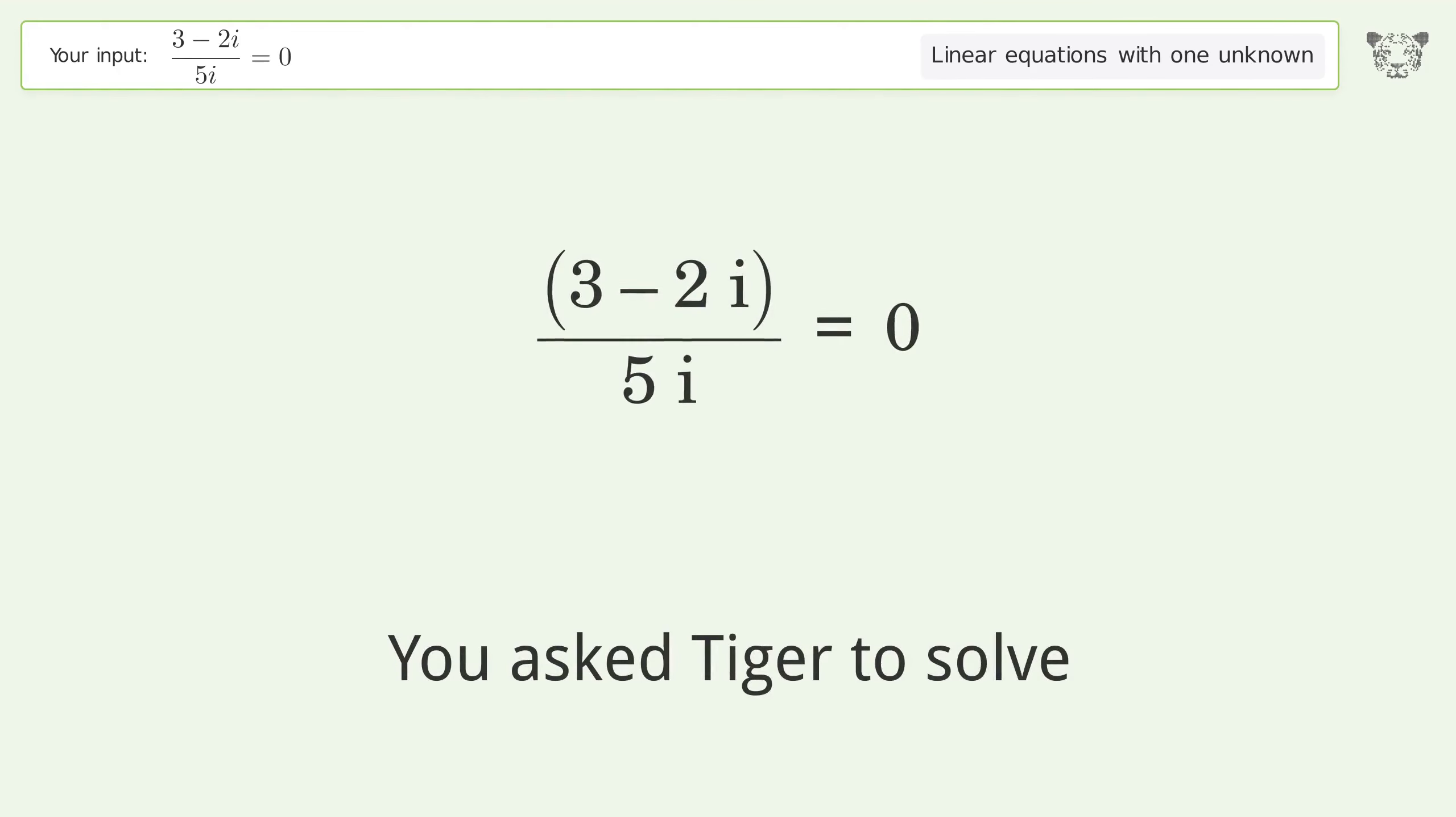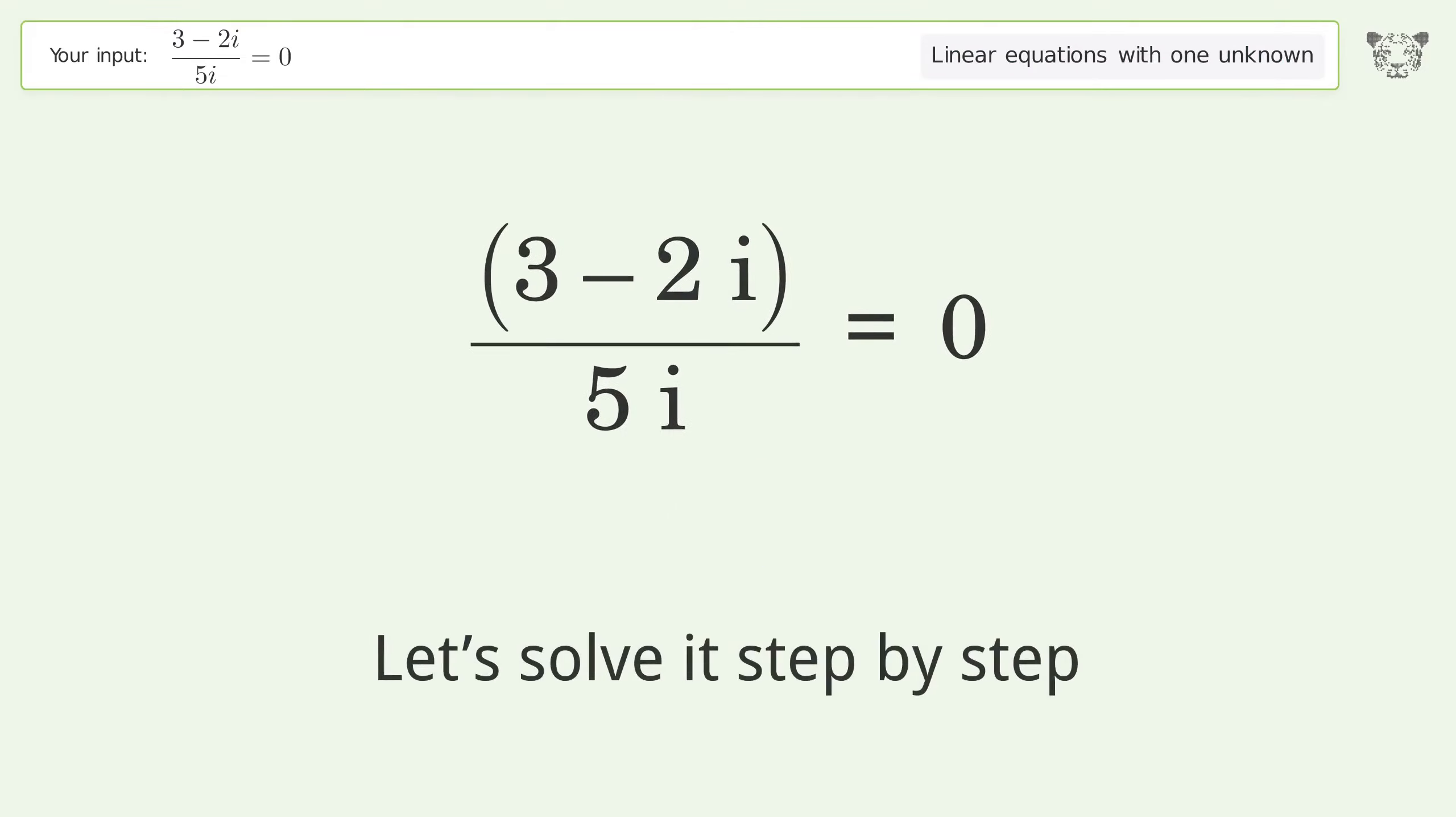You asked Tiger to solve this. It deals with linear equations with one unknown. The final result is i equals 3 over 2. Let's solve it step by step. Simplify the expression, break up the fraction.